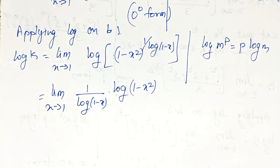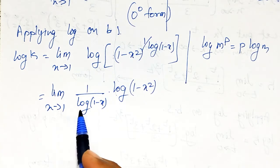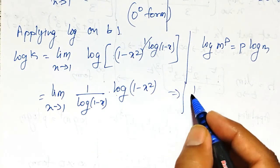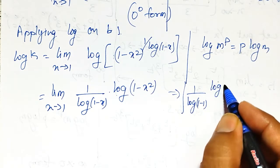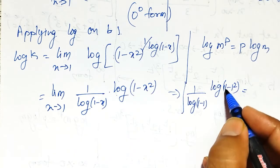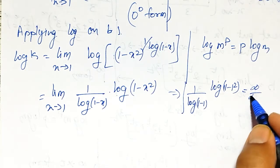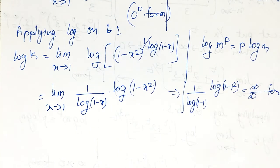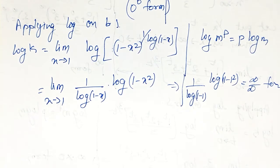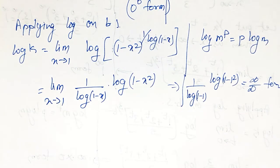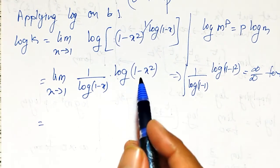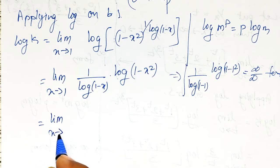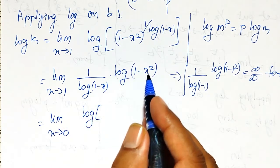But if we substitute x tends to 1 here directly, it becomes log(1 minus 1) divided by log(1 minus 1 squared), which gives infinity over infinity form — this would make the solution very lengthy using L'Hôpital's rule. Instead, there is a simpler way: I will use the fact that the limit as x tends to 1 of log(1 minus x squared)...